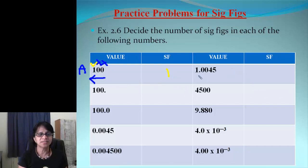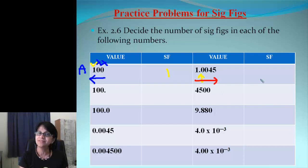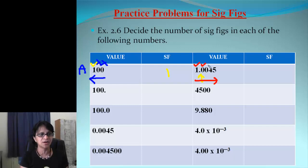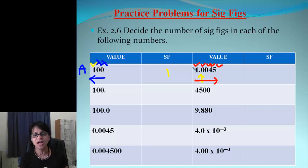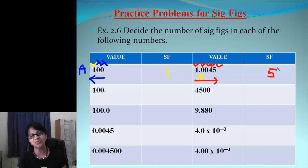For the next number, the decimal point is present, so we go from Pacific to Atlantic and count from the first non-zero number. 1 is non-zero, then you keep counting — once you start, you don't stop. So counting each digit gives sig figs as 5.